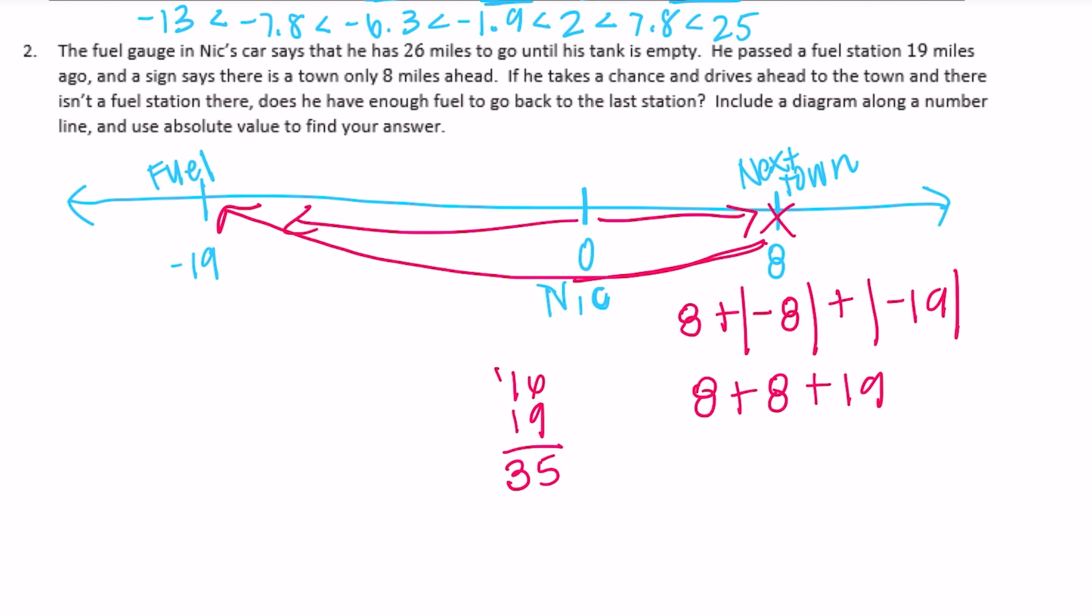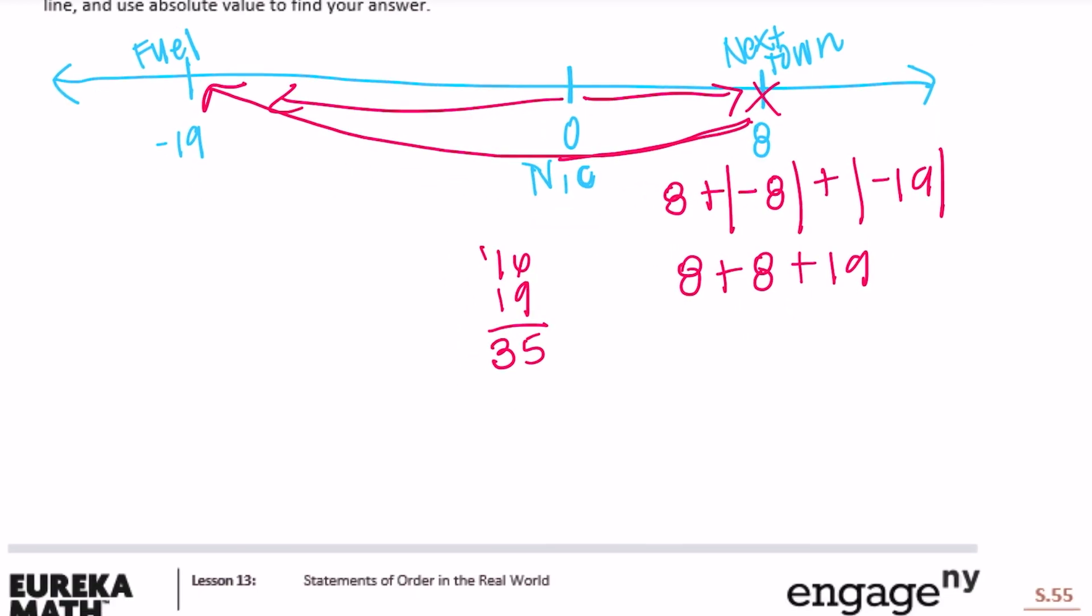So 16 plus 19 would be 35. So he would need to go 35 miles to get to the next town, and then if there's no gas station, get all the way back to the previous town. But he only has 26 miles left. So no, he does not have enough fuel.